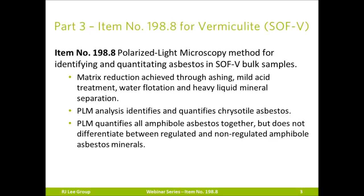Today, in Part 3 of our webinar series, we will describe the New York State Department of Health method 198.8, the polarized light microscopy method for identifying and quantitating asbestos in spray-on fireproofing with vermiculite bulk samples. In this method, matrix reduction is achieved through ashing, mild acid treatment, water flotation, and heavy liquid mineral separation. Polarized light microscopy analysis identifies and quantifies chrysotile asbestos, and also quantifies all amphibole asbestos together, but does not differentiate between regulated and non-regulated amphibole asbestos minerals.